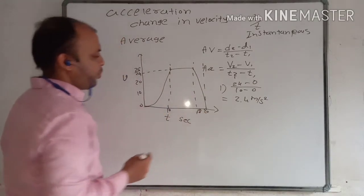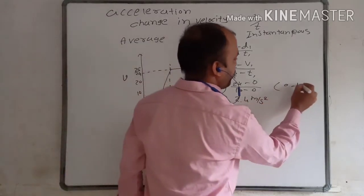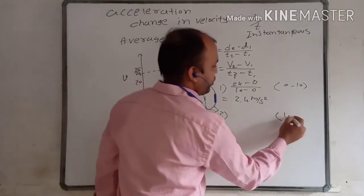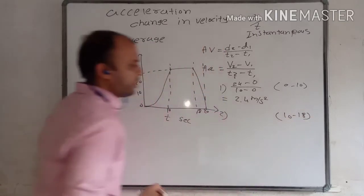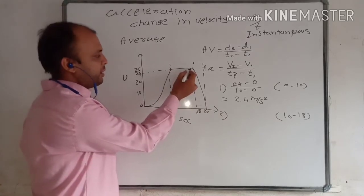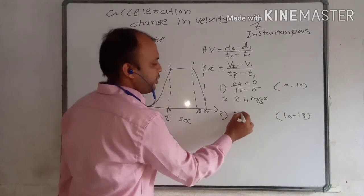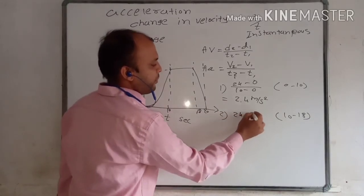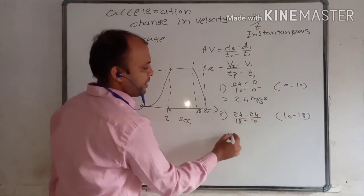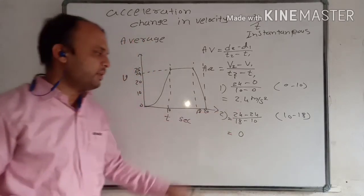Now for the second case, 10 to 18 seconds. In this interval we can see there is no change in velocity — velocity remains constant at 24. So here, initial velocity is 24 and final is also 24, divided by (18 minus 10). The numerator becomes 0, so acceleration is 0.